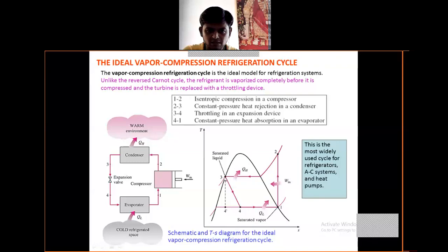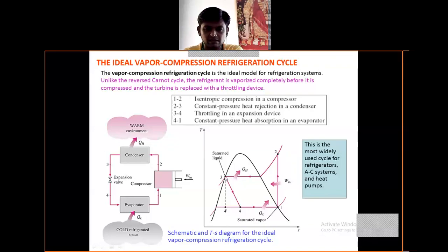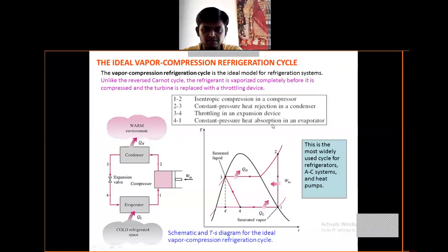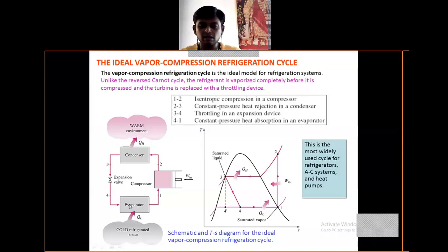It is constant-pressure heat rejection in the condenser — process two-to-three, QH rejection to the warm environment. Then three-to-four is throttling in the expansion device through an expansion valve. Four-to-one is constant-pressure heat absorption in the evaporator, with QL entering from the cold refrigeration space.